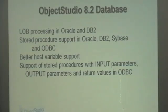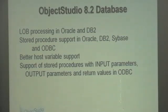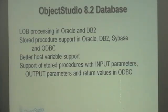Other new things in Object Studio 8.2 include database enhancements. We now support large object processing in Oracle and DB2, with better support overall. We enhanced stored procedure support in Oracle, DB2, Sybase, and ODBC. We have better host variable support in records, and on ODBC we now also support input and output parameters for stored procedures.